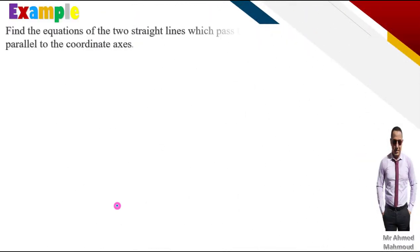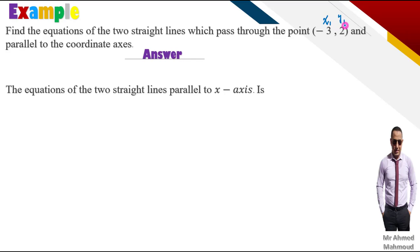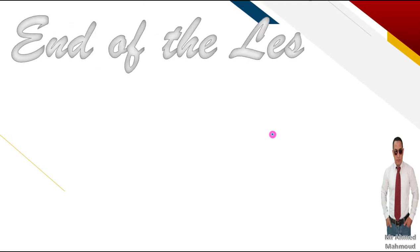هناخد إكزامبل أخير: find the equation of the two straight lines which pass through the point (-3, 2) and parallel to the coordinate axes. x1 = -3 و y1 = 2. الأول: line parallel to x-axis: y = y1، يعني y = 2. التانية: line parallel to y-axis: x = x1، يعني x = -3. This is the end of the lesson. I hope it was helpful for you. See you inshallah in the next video.